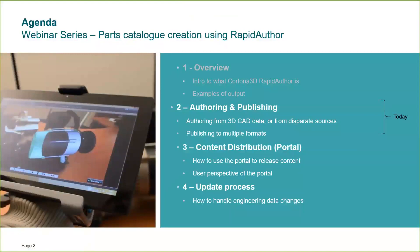We already have the recording of the first webinar episode, which was an introduction to this section of the Cortona 3D Rapid Author toolset. Today we're focusing, as the second episode, on the authoring and publishing process. These are always meant to be a very short introduction — we're going straight into the tool. The next episode will cover the content distribution portal, and the final episode will cover what happens when there's an engineering data change.